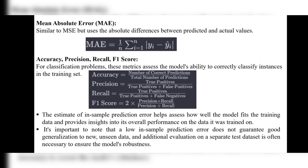An additional evaluation on a separate test dataset is often necessary to ensure the model's robustness. In-sample prediction error is used only for small datasets. If we are using only a small dataset, we cannot estimate that it will give good results. If we have large datasets, it can give accurate and good results, whereas for small datasets it cannot.